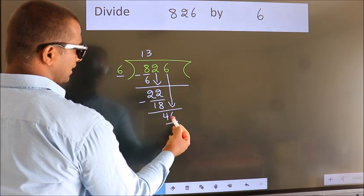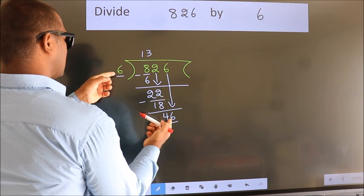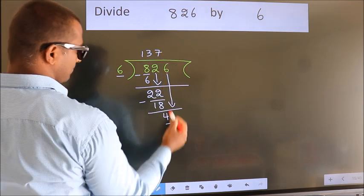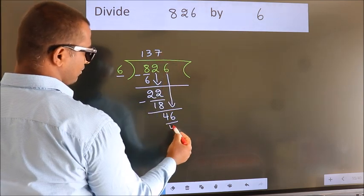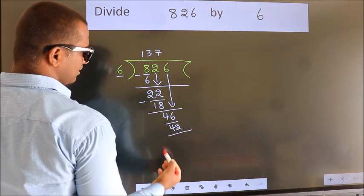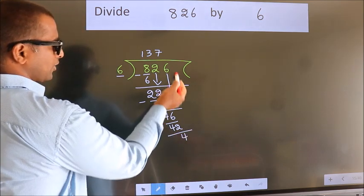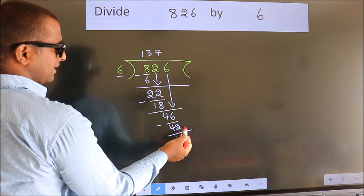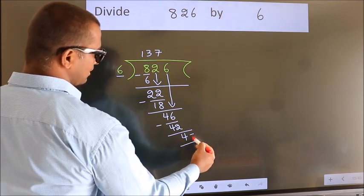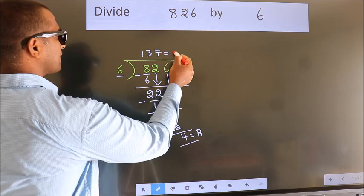So we have 46. A number close to 46 in the 6 times table is 6 sevens, which is 42. Now we subtract and we get 4. There are no more numbers to bring down, so we stop here. This 4 is our remainder, and this is our quotient.